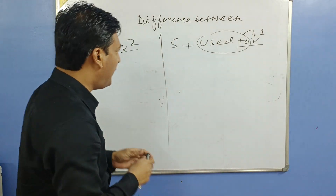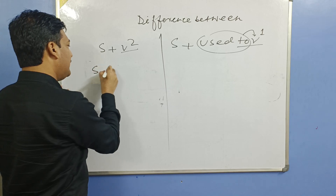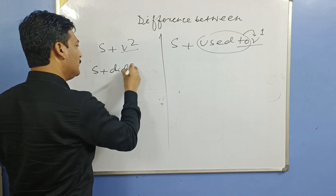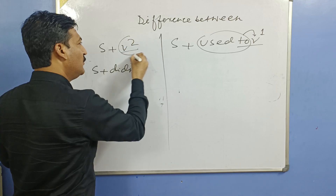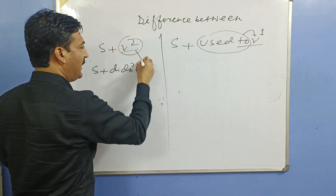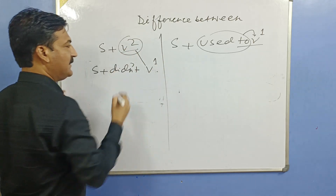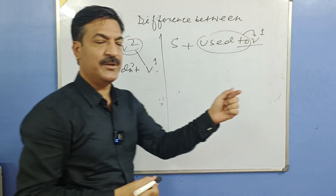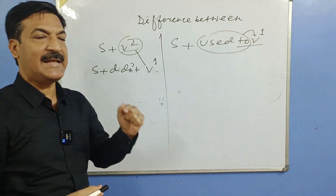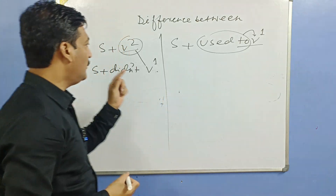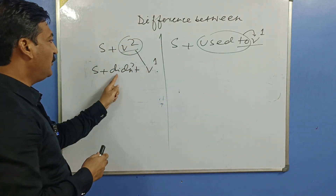Whenever we talk about past actions and it will be negative, then 'did' will be used — 'did not'. Remember: after do, does, did, the verb always comes in its first form (V1). For example: went → did not go; played → did not play; sent → did not send. Do, does, did ke baad hamesha verb apne pehle form mein aata hai.